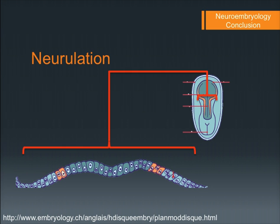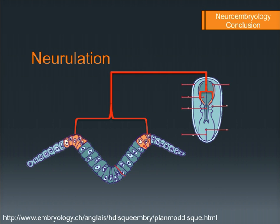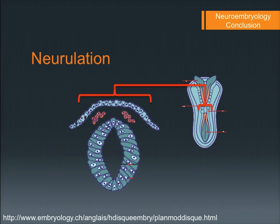Looking at it from both the transverse and the apical view, you can see the epiblast in blue, the neural plate in dark green, and those neural crest cells starting to come up together. As they contact each other, the neural crest cells detach, the epiblast remains, and the neural tube becomes patent — that's about day 28.